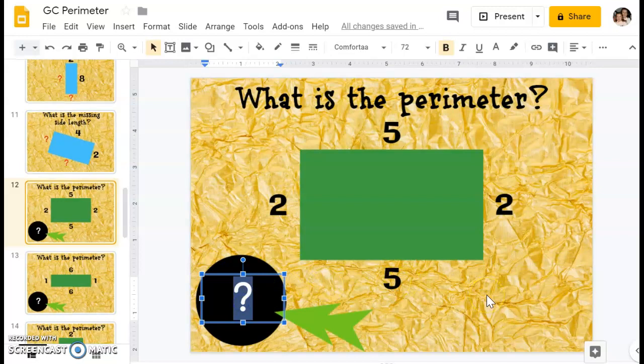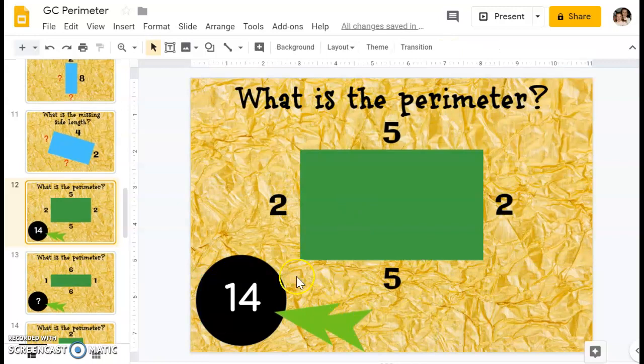I'm going to double click my question mark so it turns blue, and then I'm going to type 14 on my keyboard, and that tells the teacher that the perimeter of this shape is 14.